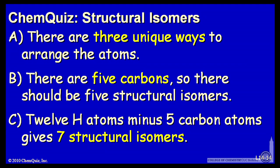Let's look at a possible explanation for each of the answers. A, there are three unique ways to arrange the atoms. B, there are five carbons, so there should be five structural isomers.